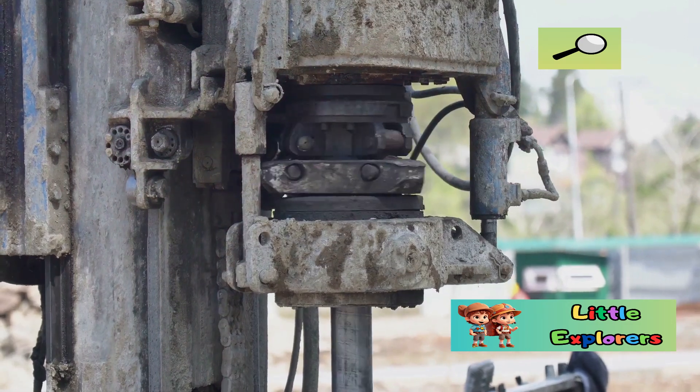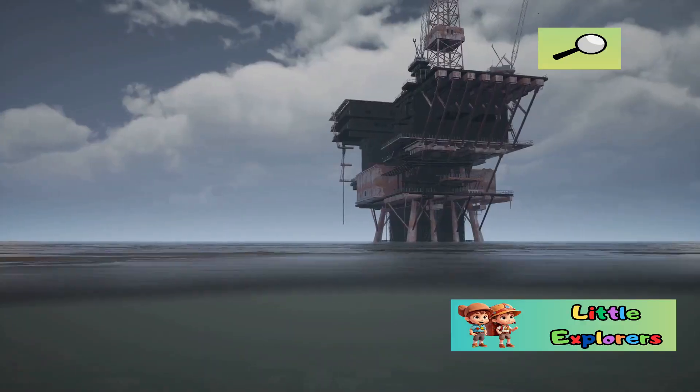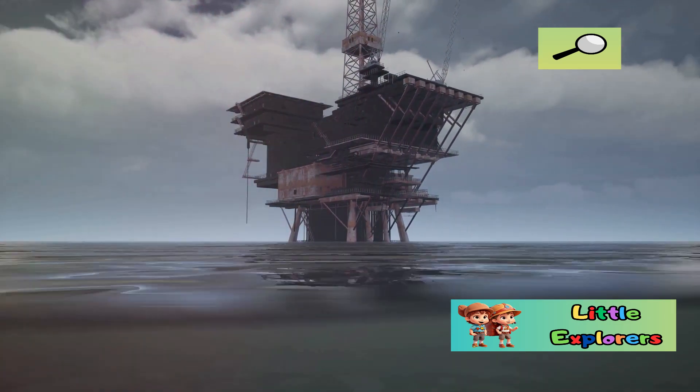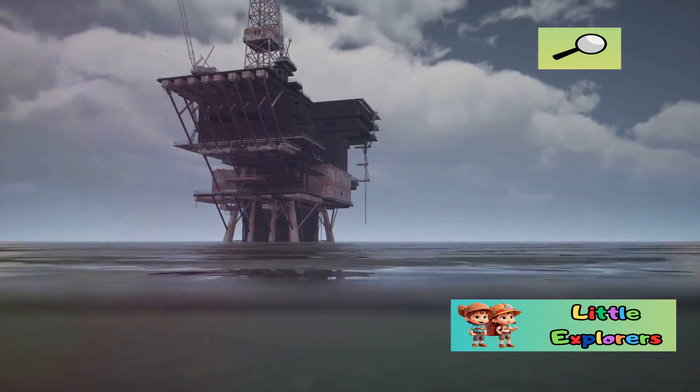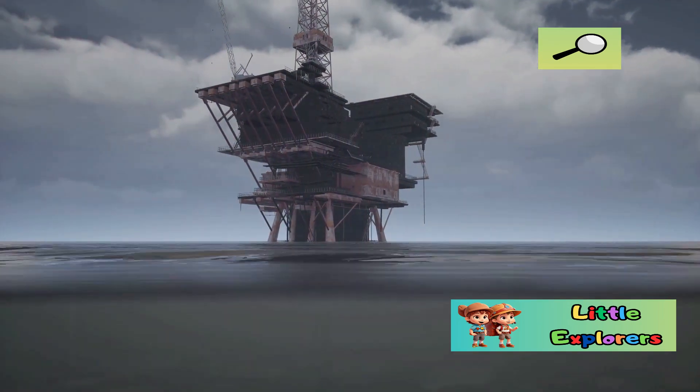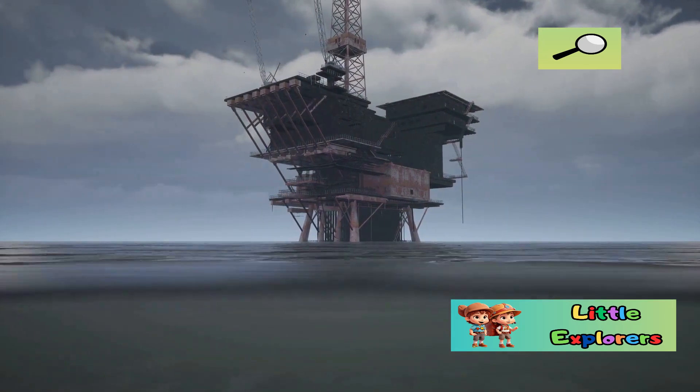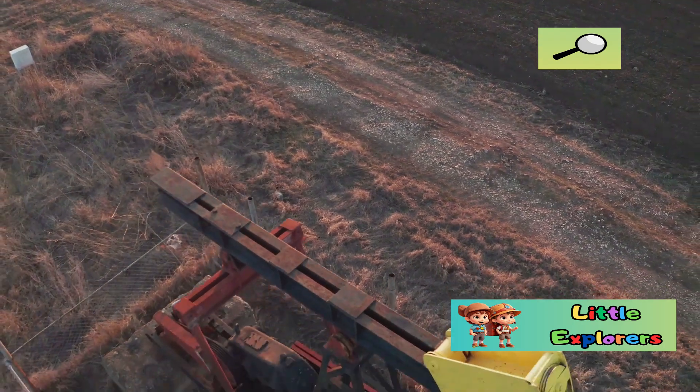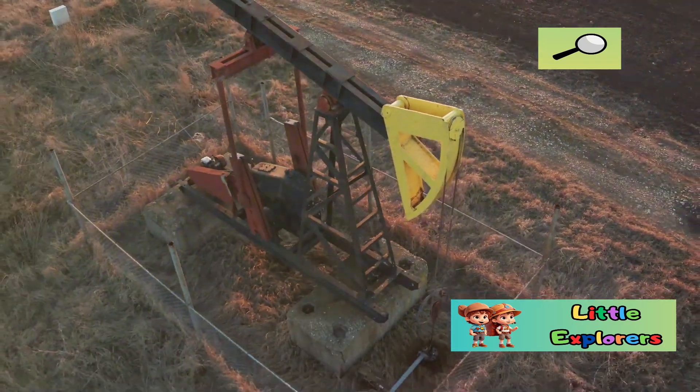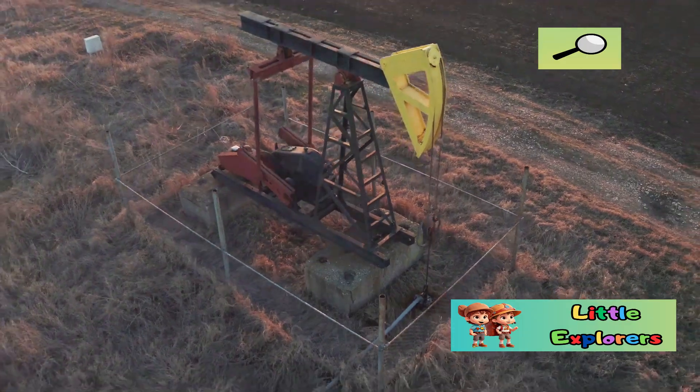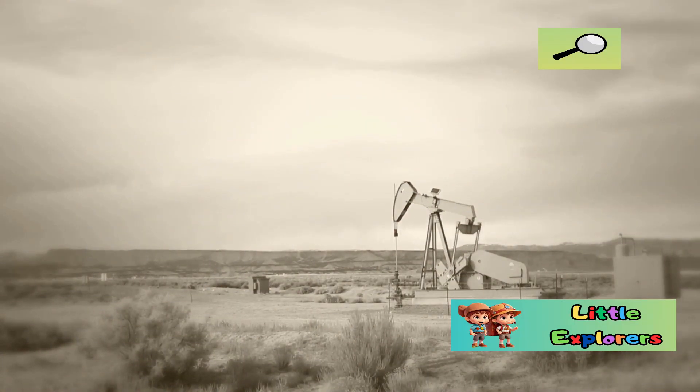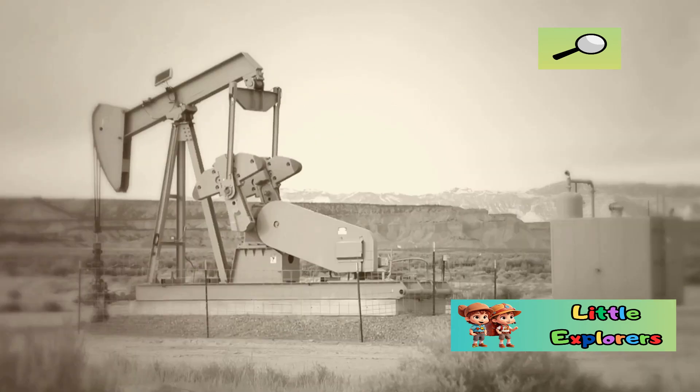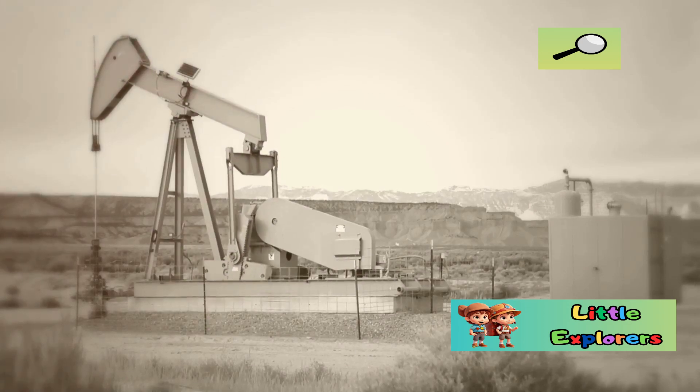Oil exploration drove the development of new technologies, allowing us to drill deeper and faster. The demand for oil as a key energy source spurred innovation and led to significant advancements in drilling techniques. One notable early project was the Bertha Rogers well in Oklahoma, USA. This ambitious endeavor aimed to reach unprecedented depths in search of natural gas. Completed in 1930, it reached a depth of over 9,500 meters, a record at the time. The Bertha Rogers well was a testament to human ingenuity and the relentless pursuit of progress.